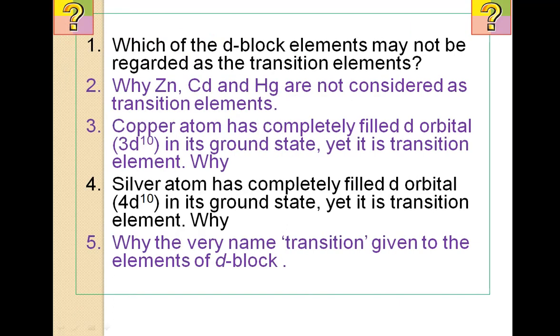Now here are some questions. Which of the d block elements may not be regarded as transition elements? Your answer should be zinc, cadmium and mercury. These are not regarded as transition elements. Second question was why? Because we have just seen the case of zinc. Same will be the case in cadmium and mercury also. Neither in metallic form nor in any of the oxidation states, these have incompletely filled d sub shell.